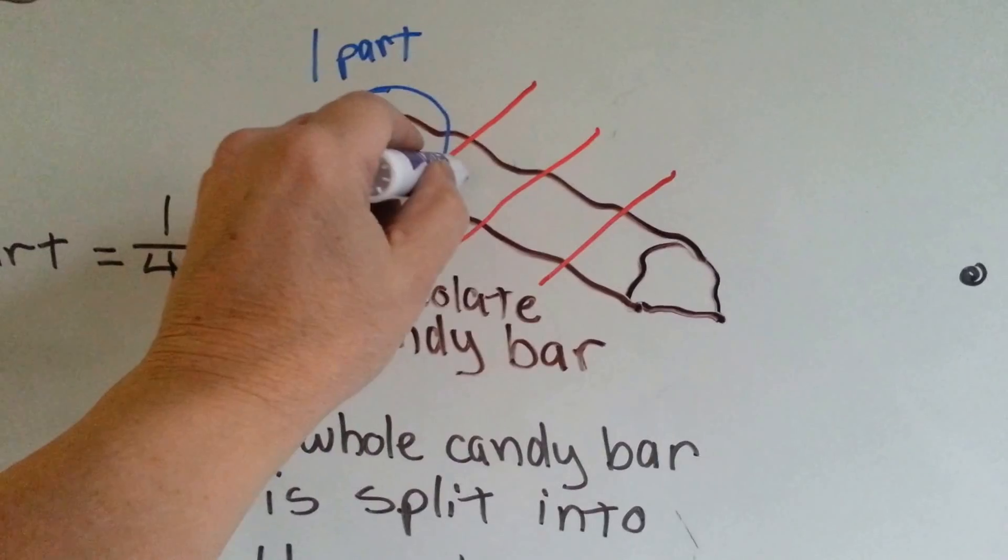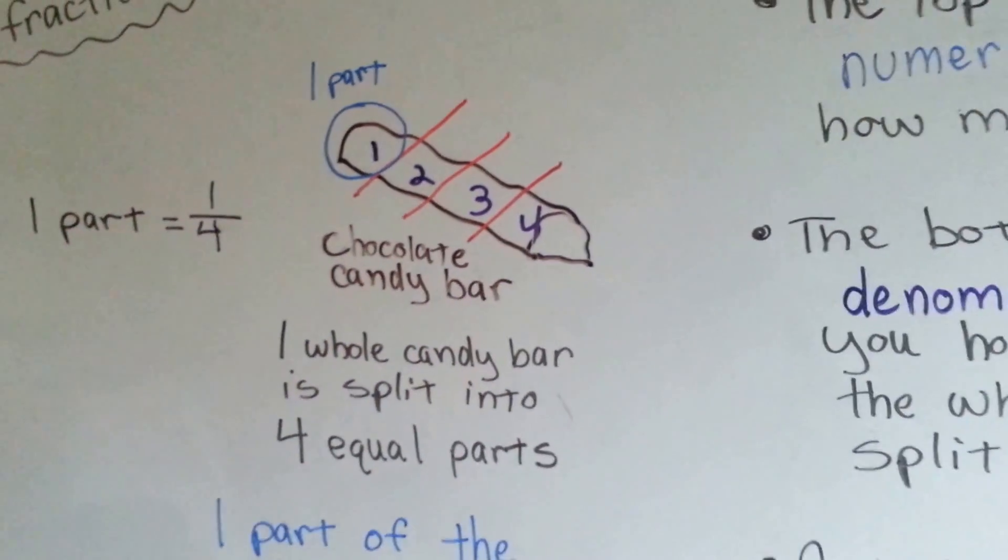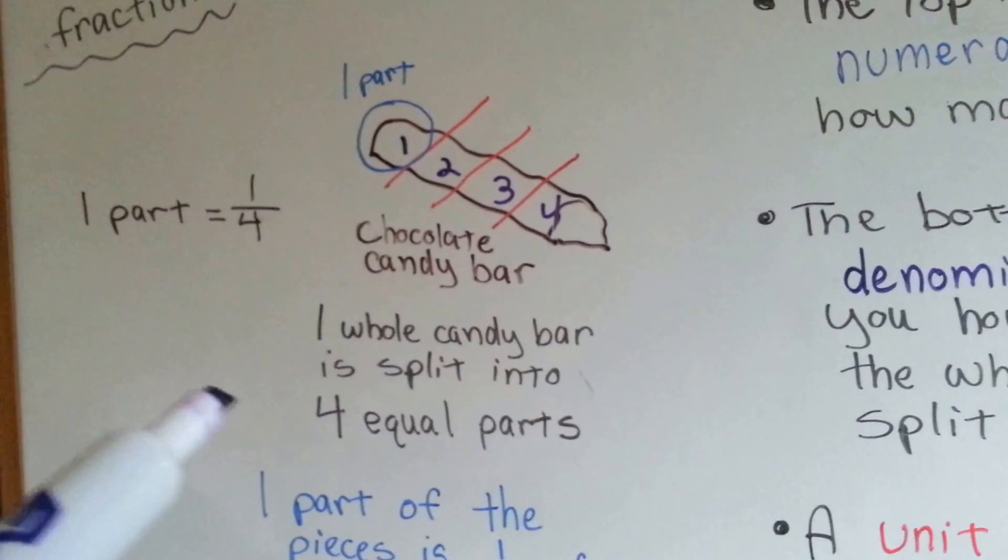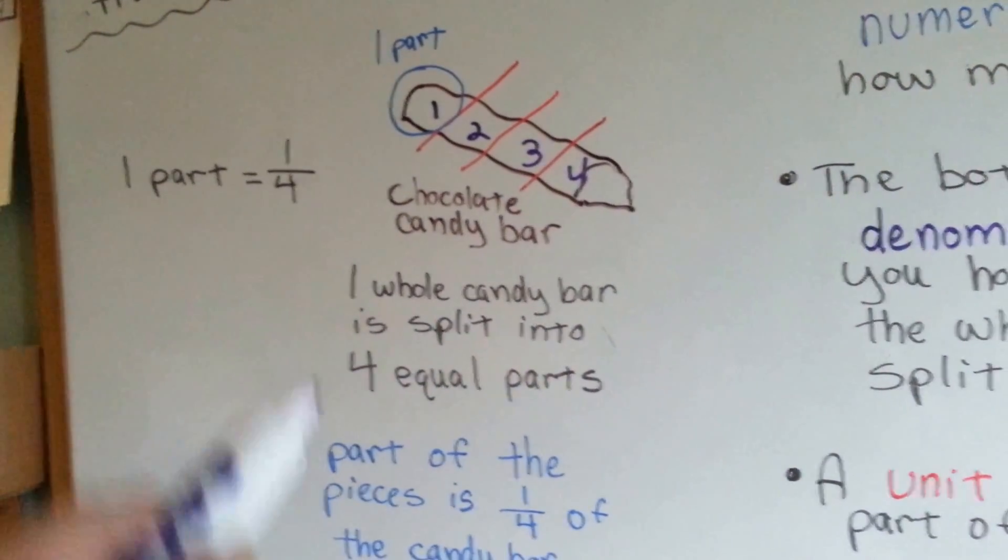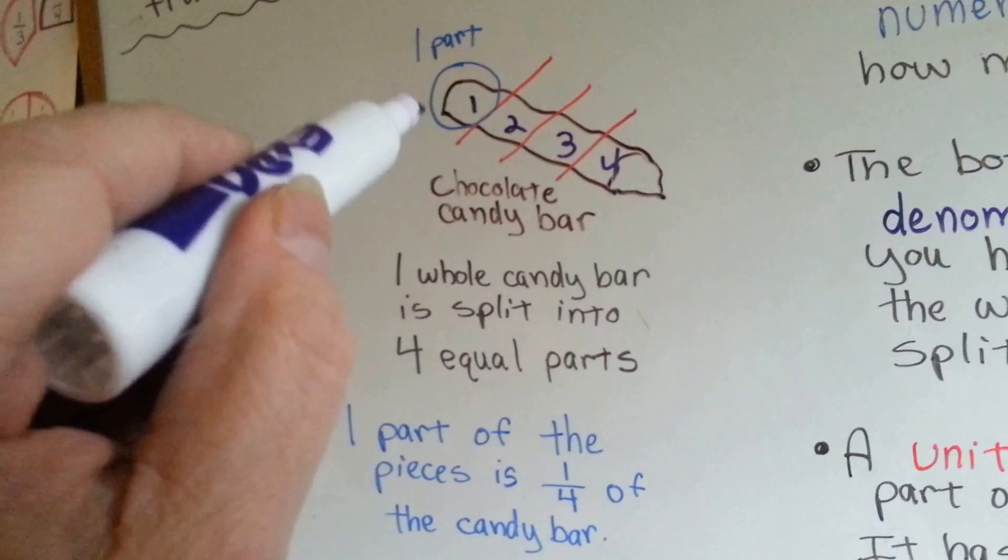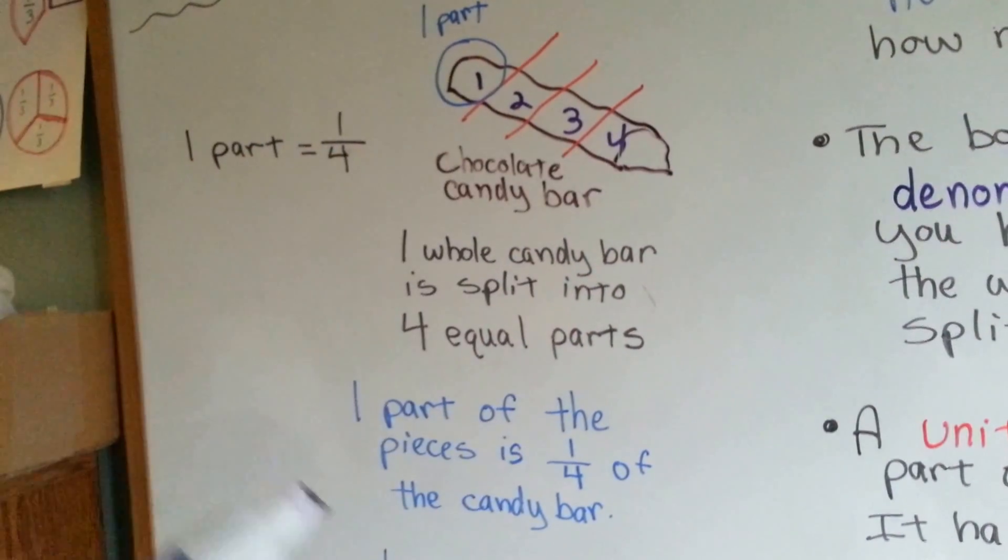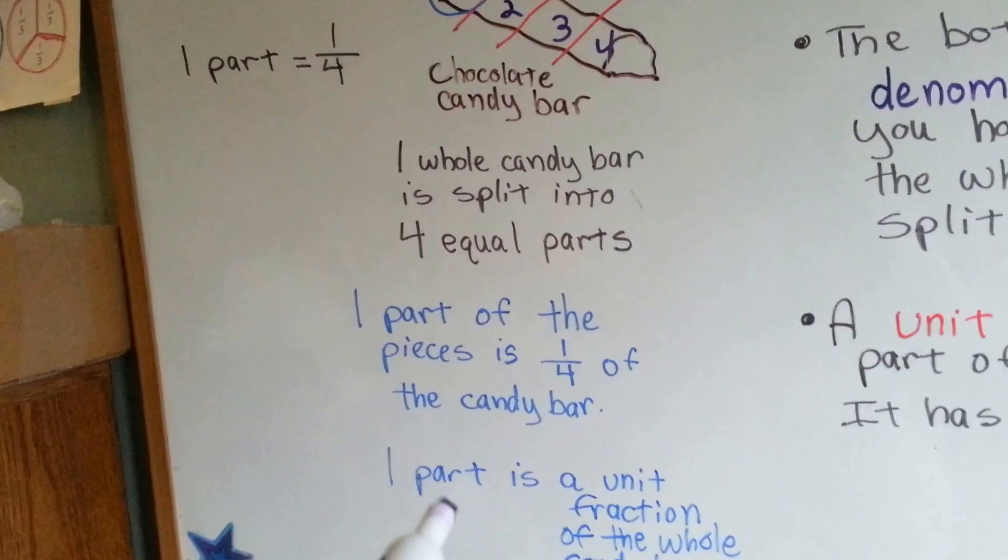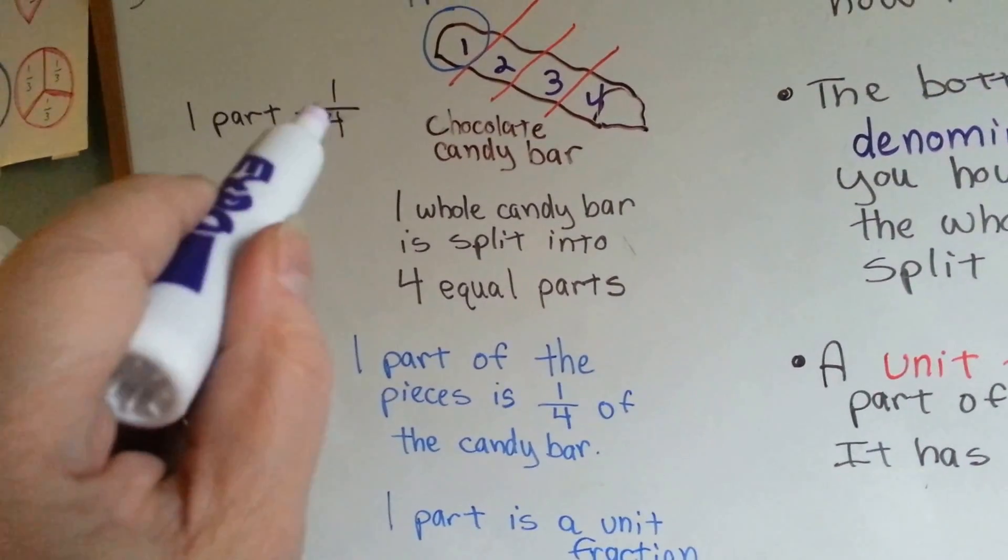I got one, two, three, four. Okay? So one whole candy bar is split into four equal parts. One part of the pieces is one-fourth of the candy bar. It's one part over four. See? One part is a unit fraction of the whole candy bar. See? It's one-fourth.